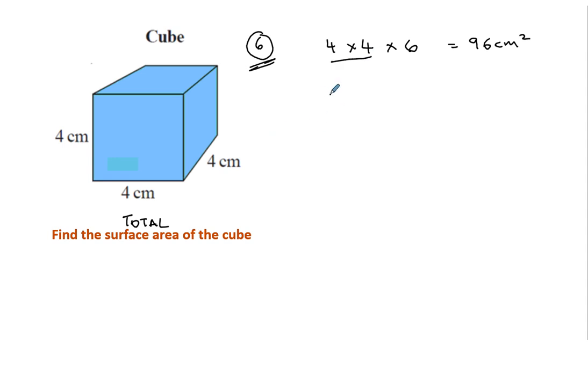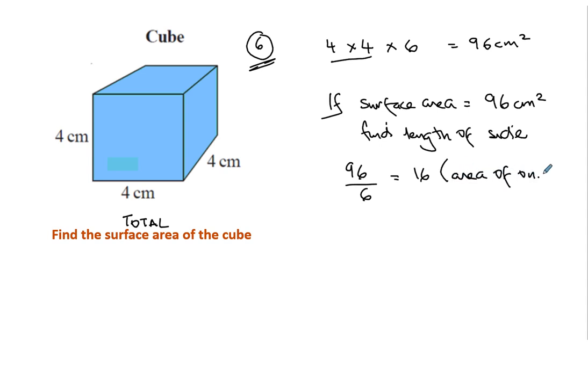If the surface area was given, so if they told you that the surface area is 96 centimetres squared and they ask you to find length of side, and you know all the sides are equal, then you'd say 96 divided by 6, which is 16, will be the area of one face. And because you know the face is a square, you'd say the length equals the square root of 16, which is 4. So it's all just a case of rearranging if they give you the surface area and you have to find the length.